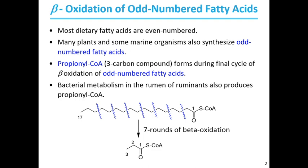Although most naturally occurring lipids contain fatty acids with an even number of carbon atoms, fatty acids with an odd number of carbons are common in the lipids of many plants and marine organisms. Long-chain odd-numbered fatty acids are oxidized in the same pathway as the even-numbered fatty acids, beginning at the carboxyl end of the chain. However, the substrate for the last pass through the beta oxidation sequence is a fatty acyl-CoA with a 5-carbon fatty acid. When this is oxidized and cleaved, the products are acetyl-CoA and propionyl-CoA.